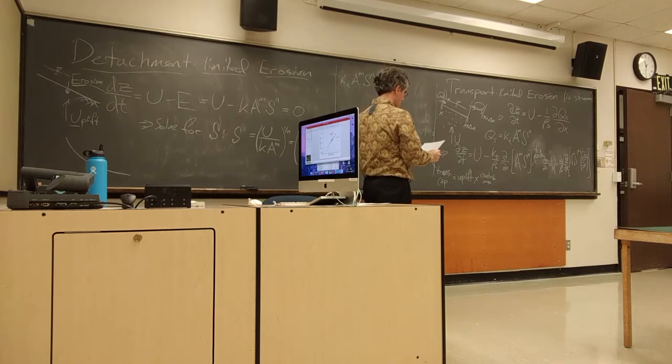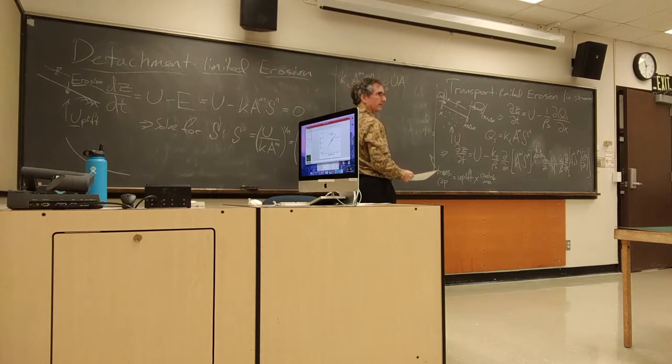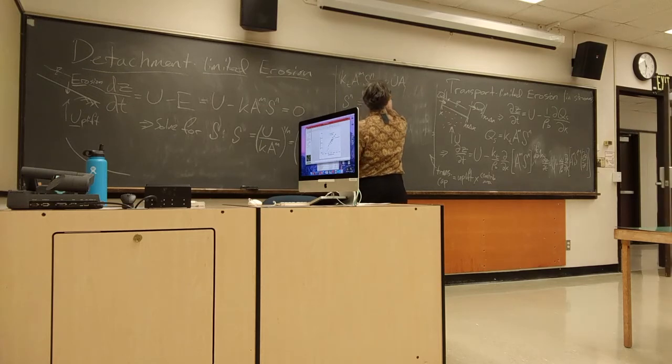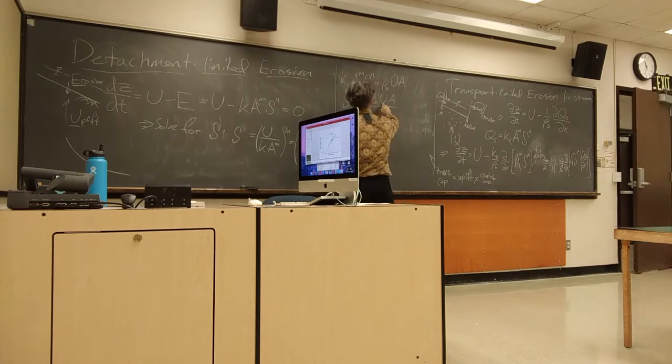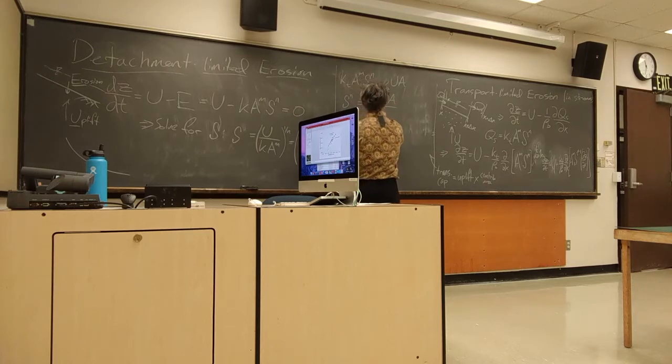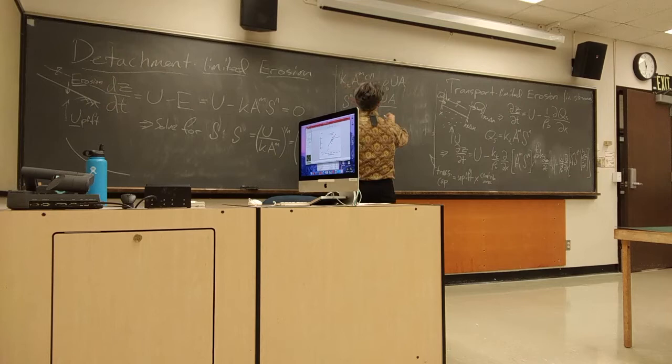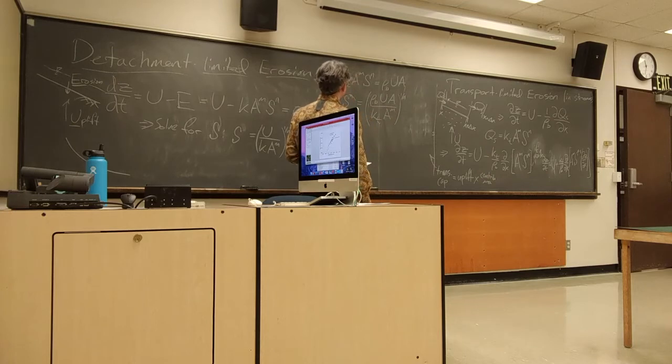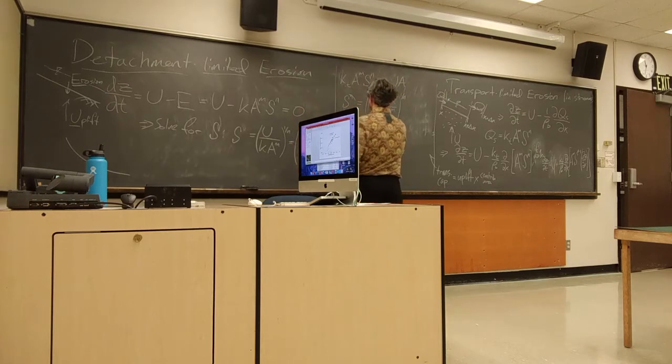So, now that I can just solve for the slope like I did over here. And, so I get S to the N equals rho B U. So, density, uplift, contributing area, divided by that transport constant, K sub T, and contributing area to the power M, raise all this to the 1 over N power, cross that N out. And I'm getting something that's somewhat similar to what I had over here.